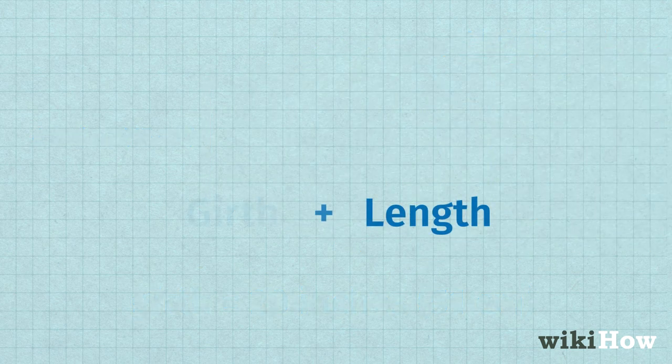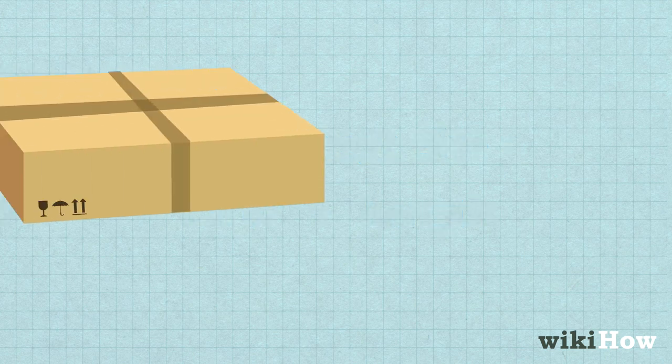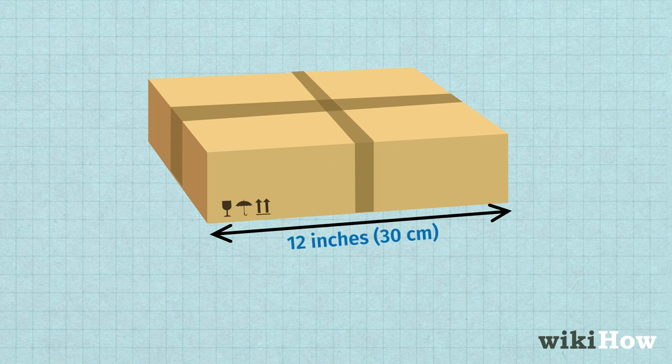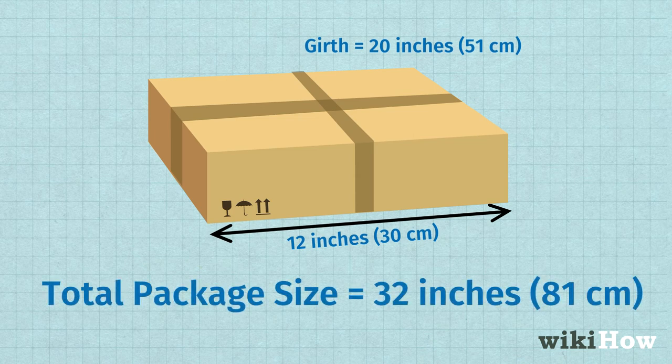Add the length to the girth to get the total package size. For instance, if your package is 12 inches (30 centimeters) long and the girth is 20 inches (51 centimeters), then the total size would be 32 inches (81 centimeters).